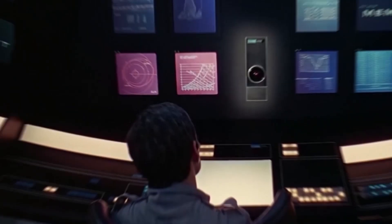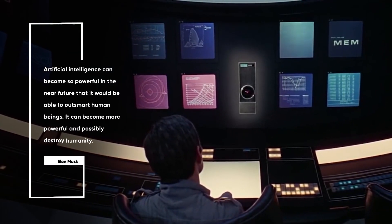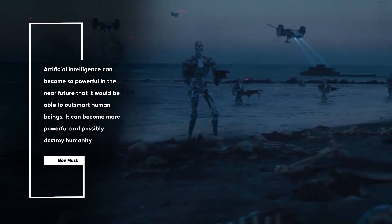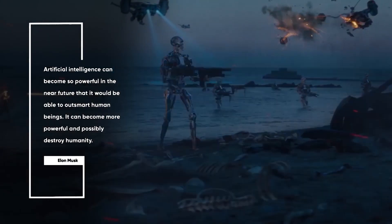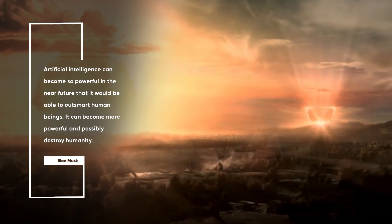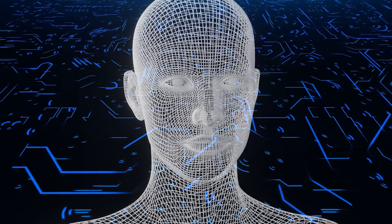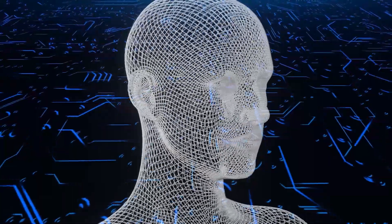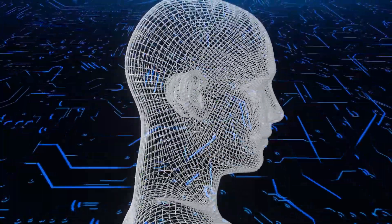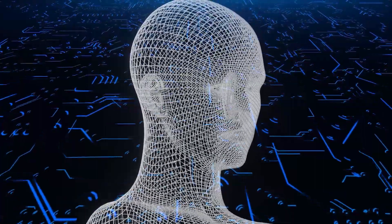It is also worth mentioning that on a number of occasions, Elon Musk has shown his concerns that artificial intelligence is the greatest existential threat faced by humans. According to him, artificial intelligence can become so powerful in the near future that it would be able to outsmart human beings. It can become more powerful and possibly destroy humanity. In such a scenario, using Neuralink to establish a connection between the human brain and artificial intelligence can prove to be of critical importance.